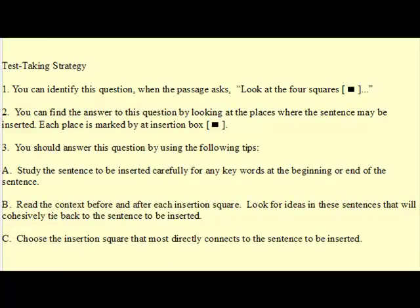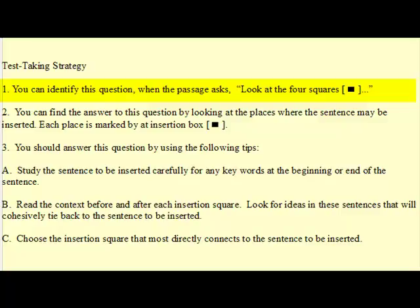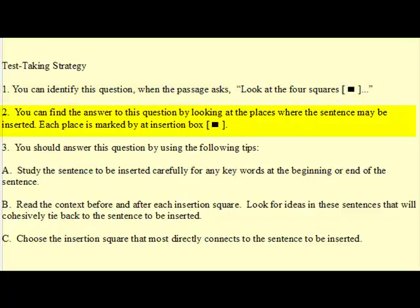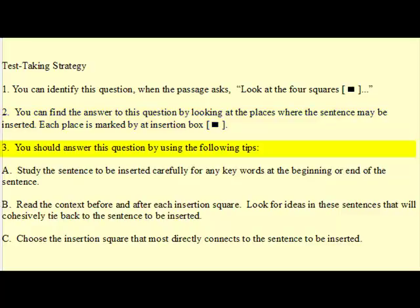Test-taking strategy. 1. You can identify this question when the passage asks: look at the four squares. 2. You can find the answer to this question by looking at the places where the sentence may be inserted. Each place is marked by an insertion box. 3. You should answer this question by using the following tips.